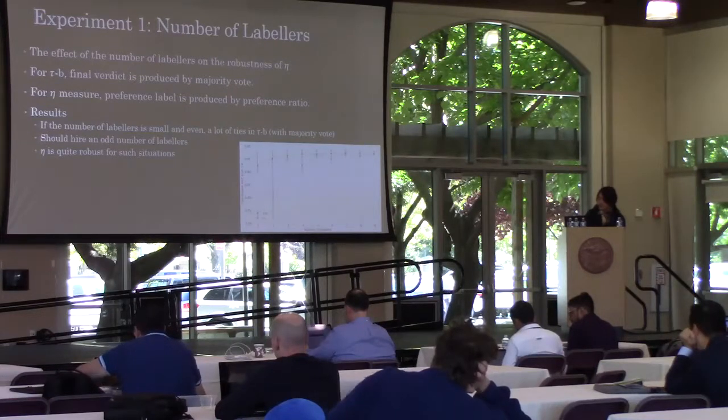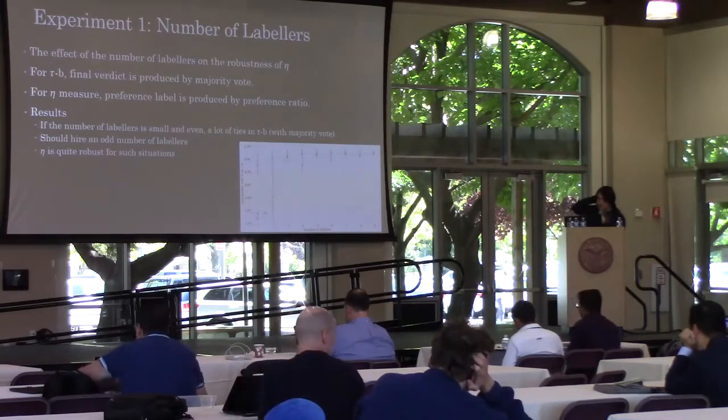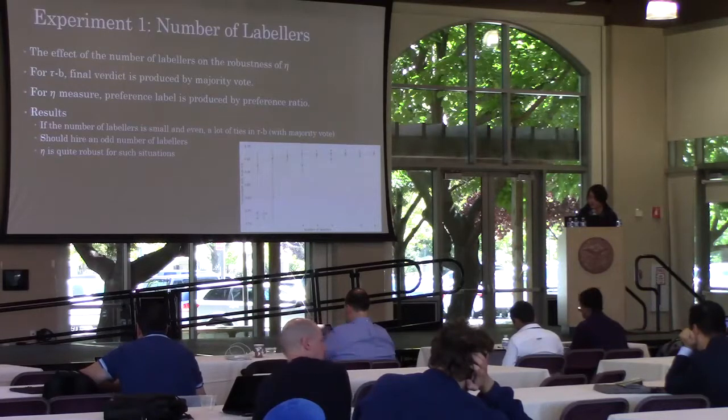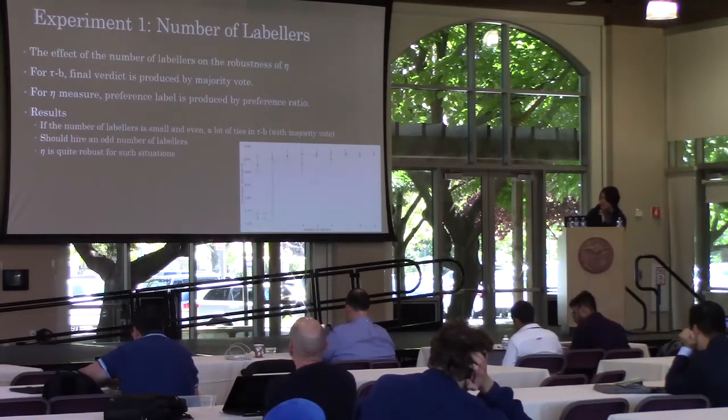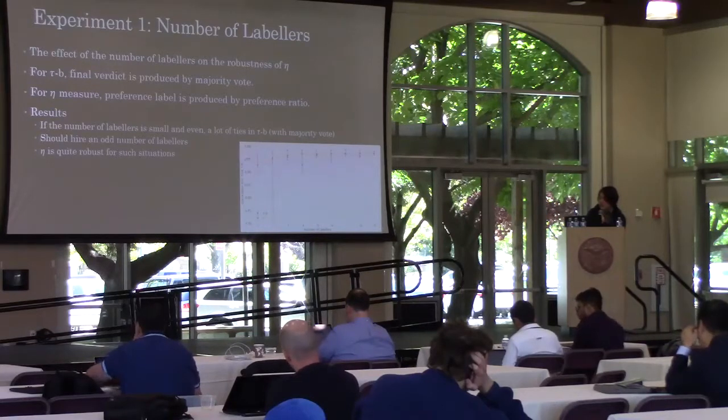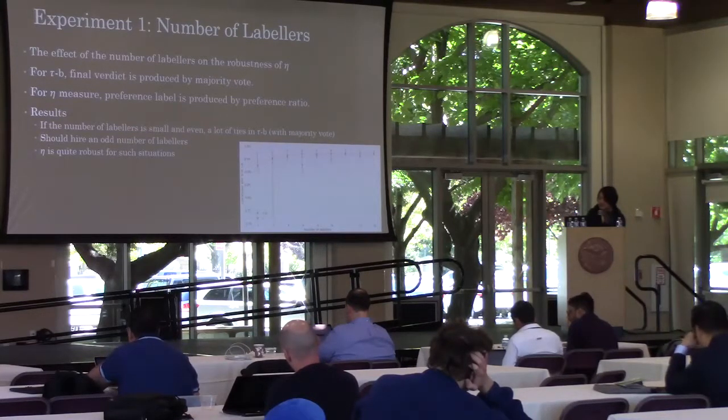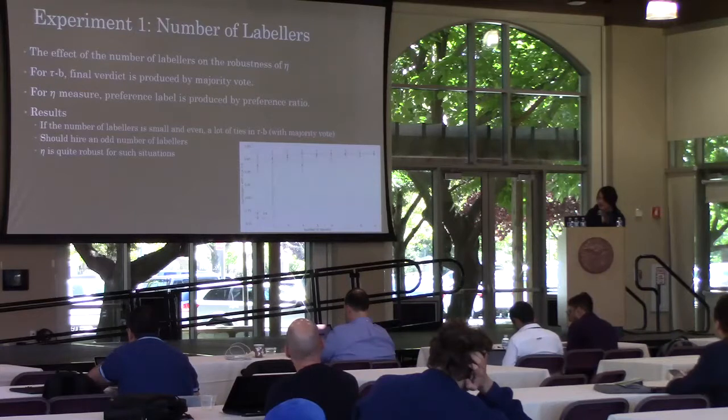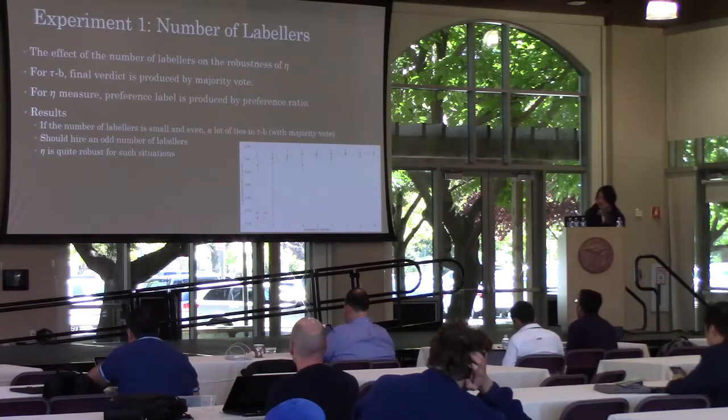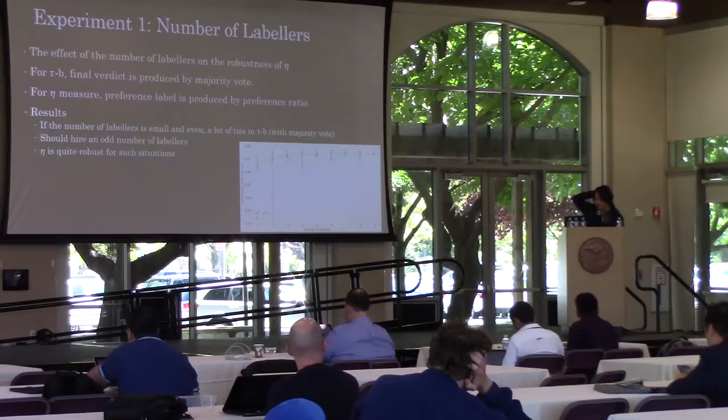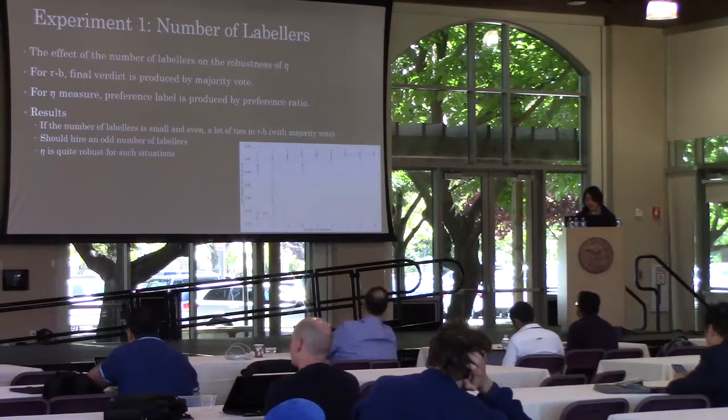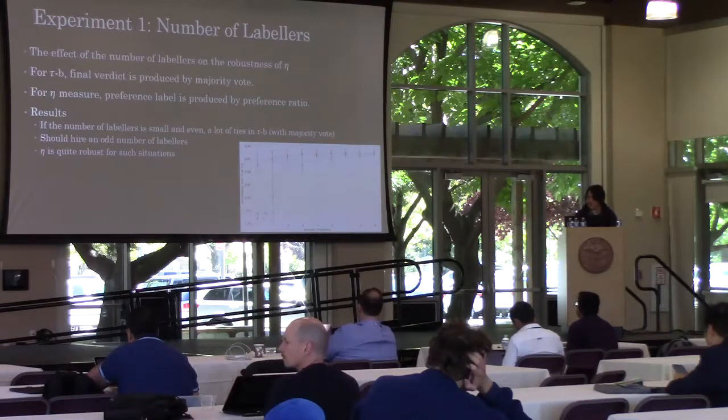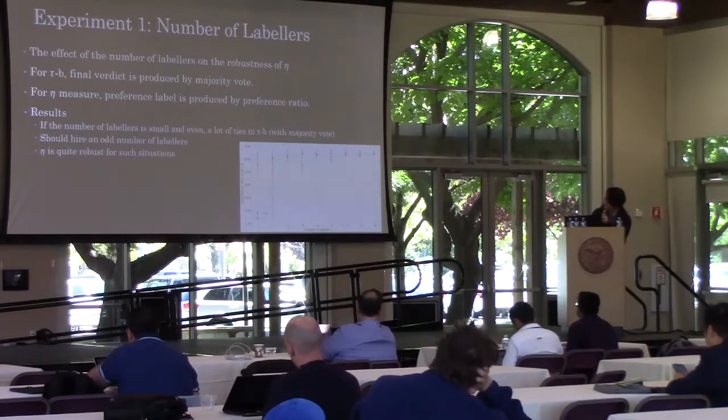First, we investigate the effect of the number of labelers. Tau degrades when the number of labelers is small and even. This is because there are a lot of ties in tau with majority voting. We should hire an odd number of labelers, but we cannot always ensure it due to exclusion of data from low-quality labelers. Eta was quite robust in this experiment.